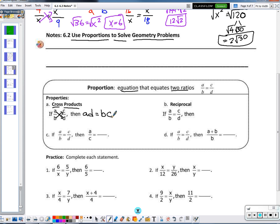Reciprocal property. What does the reciprocal mean? I flip, right? So what's the reciprocal of A/B? B/A. Reciprocal of C/D? D/C. So as long as I take the reciprocal of both ratios, the proportion is still true. So if A/B is equal to C/D, then B/A is equal to D/C.